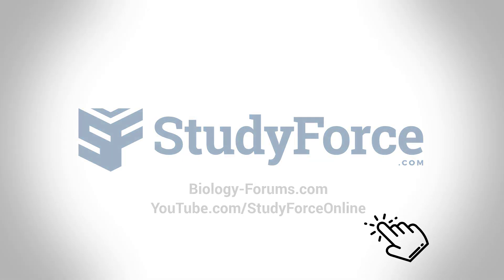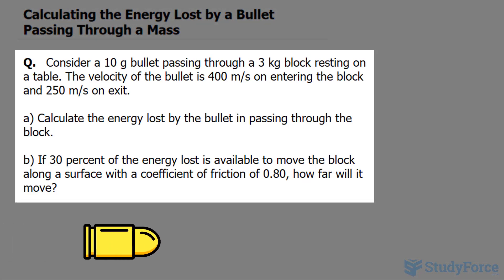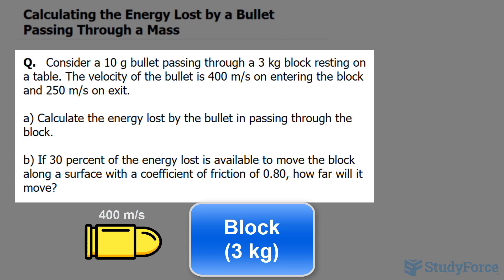In this quick tutorial, I'll show you how to calculate the energy lost by a bullet passing through a mass. The question reads, consider a 10 gram bullet passing through a 3 kilogram block resting on a table. The velocity of the bullet is 400 meters per second on entering the block and 250 meters per second on exiting.